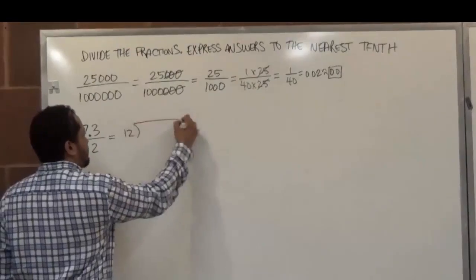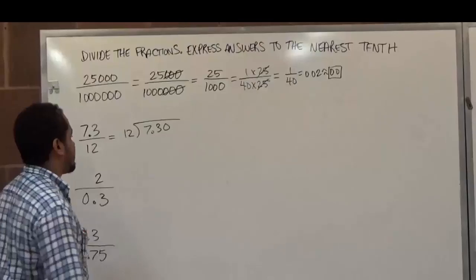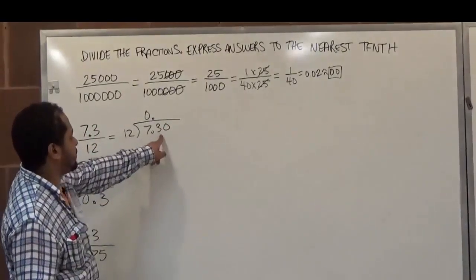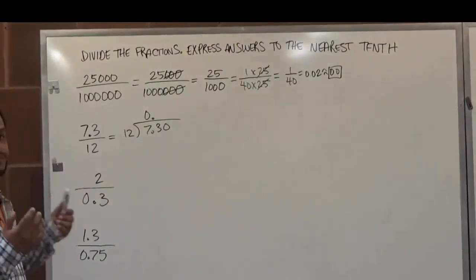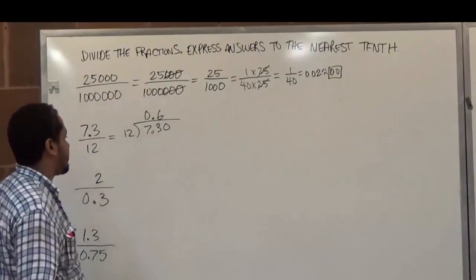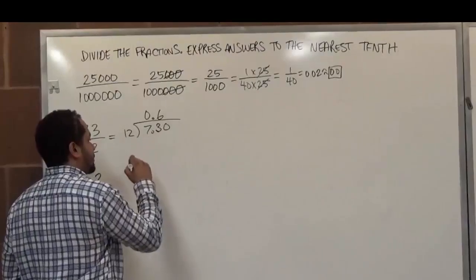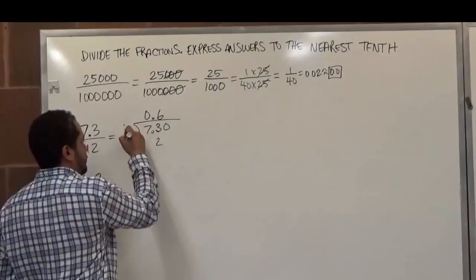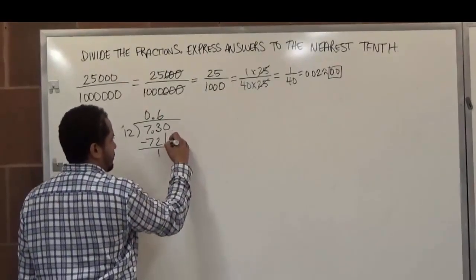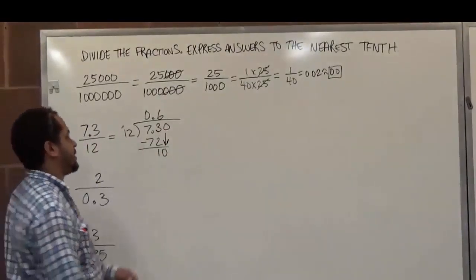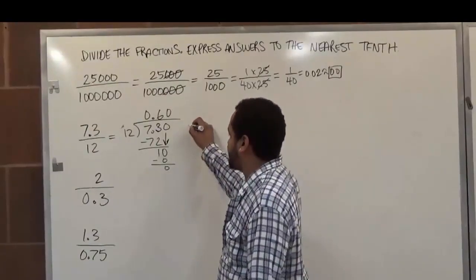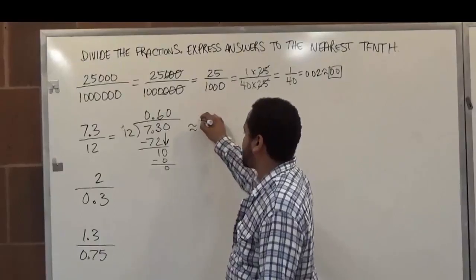We're using the twelve to divide the seven point three. We're going to go one extra space because we need the hundredths position to get this answer locked in. Twelve doesn't go into seven, so we add a zero. Twelve goes into seventy-three — twelve times six is seventy-two. Six times two is twelve, carry the one; six times one is six, plus one is seven, so that becomes seventy-two. We subtract and get one; bring down the zero and we have ten. Twelve cannot divide ten, so that becomes a zero. Because it gives us zero point six zero, there's nothing to round up, so we get zero point six, rounded to the nearest tenth.